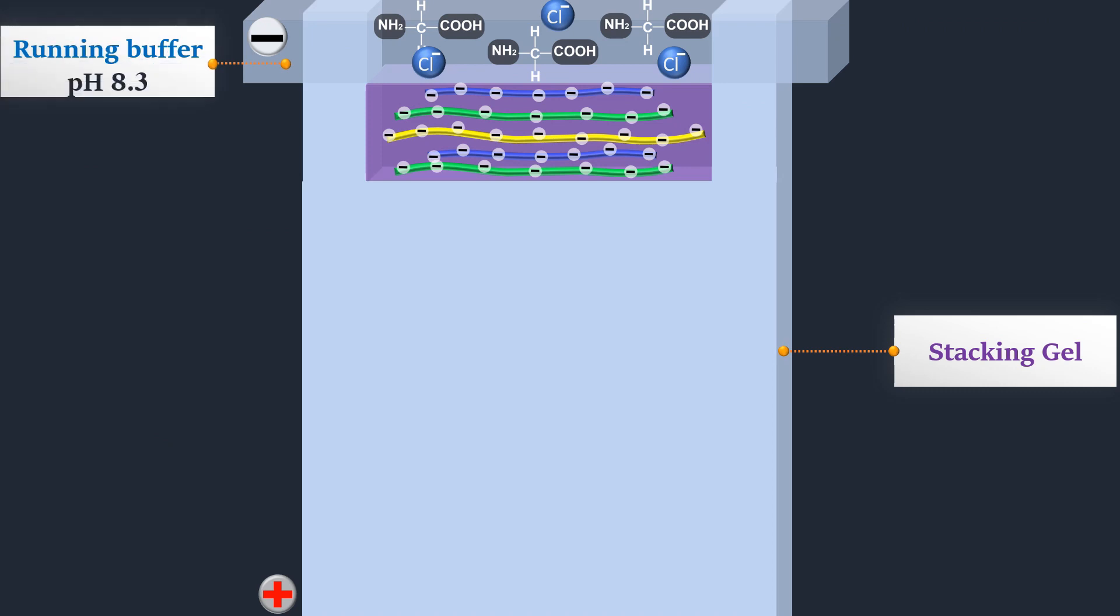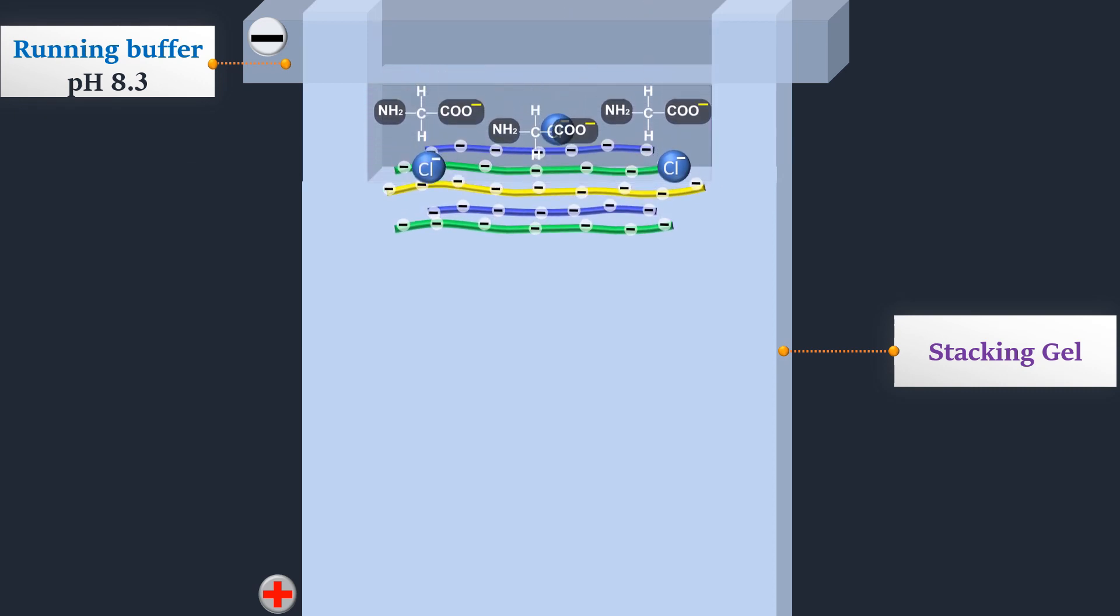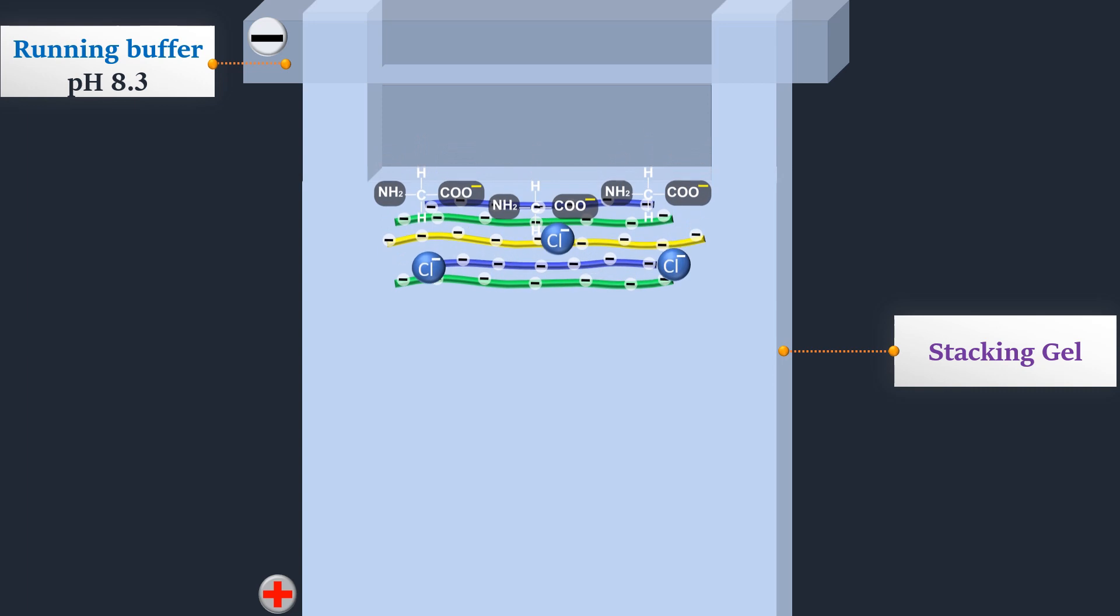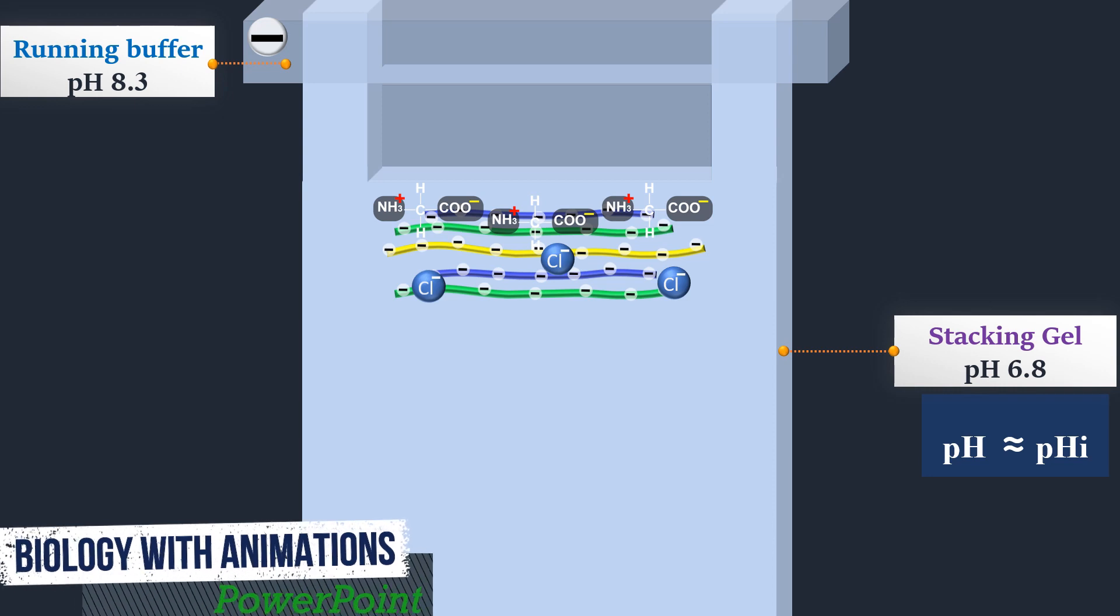The running buffer pH is equal to 8.3, which is above the pHi of glycine. So at this pH glycine is negatively charged. Once the electric current is applied, proteins, chloride ions and glycine are forced to enter the stacking gel, where the pH is equal to 6.8. At this pH glycine switches predominantly to the zwitterionic, neutrally charged state. This loss of charge causes them to move very slowly in the electric field.